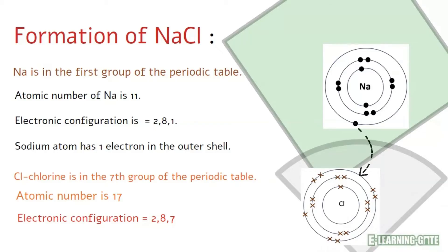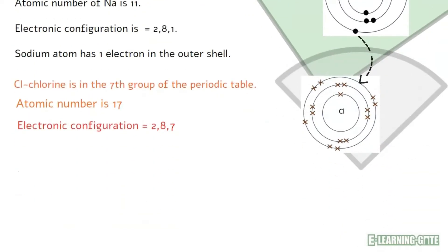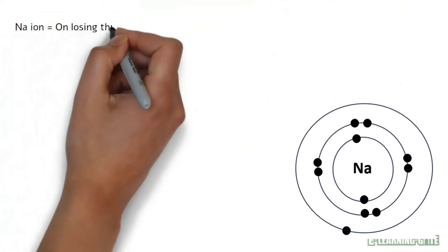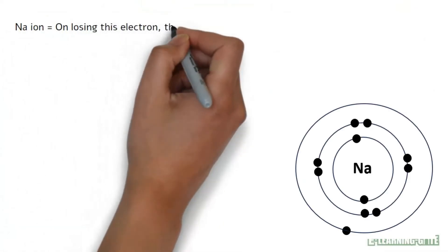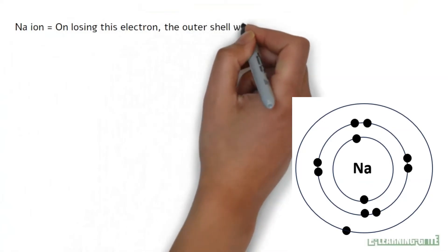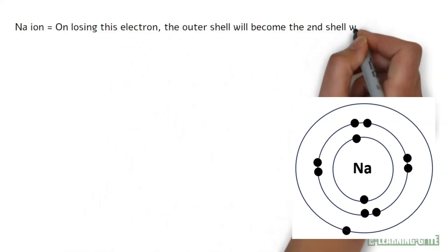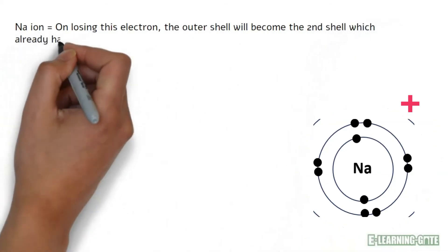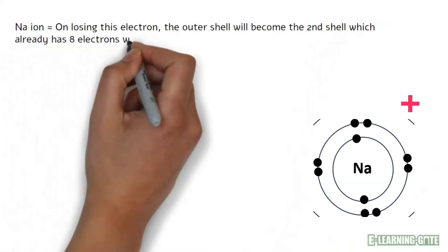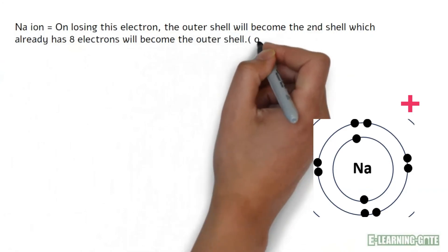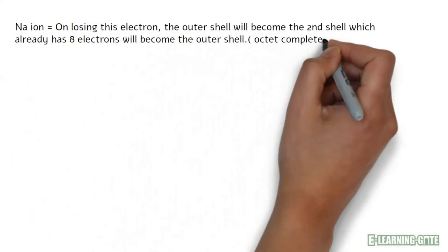In this way the octet of both atoms will complete. Now the outer shell of sodium is not the one where one electron was present, but it is the one where eight electrons are present. In other words, after losing one electron sodium has complete octet.